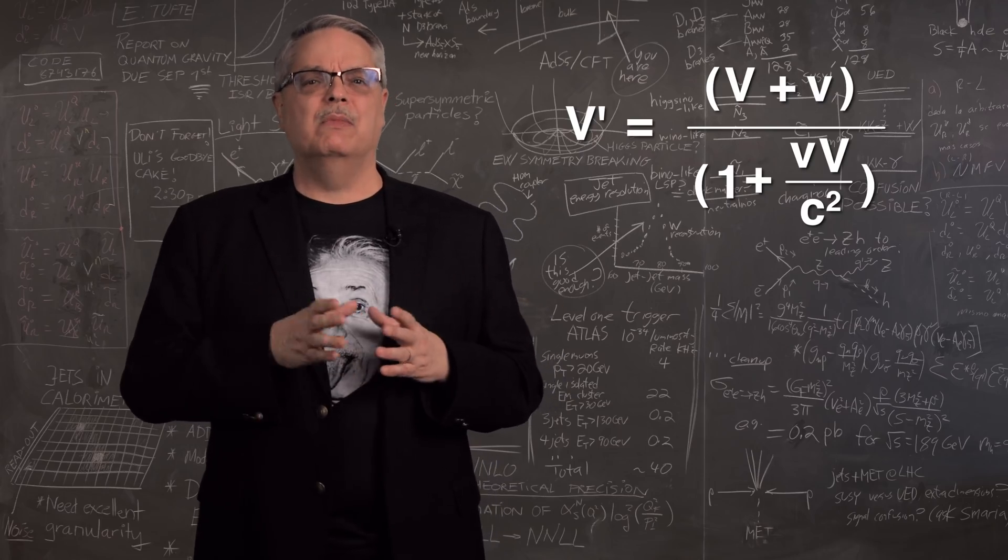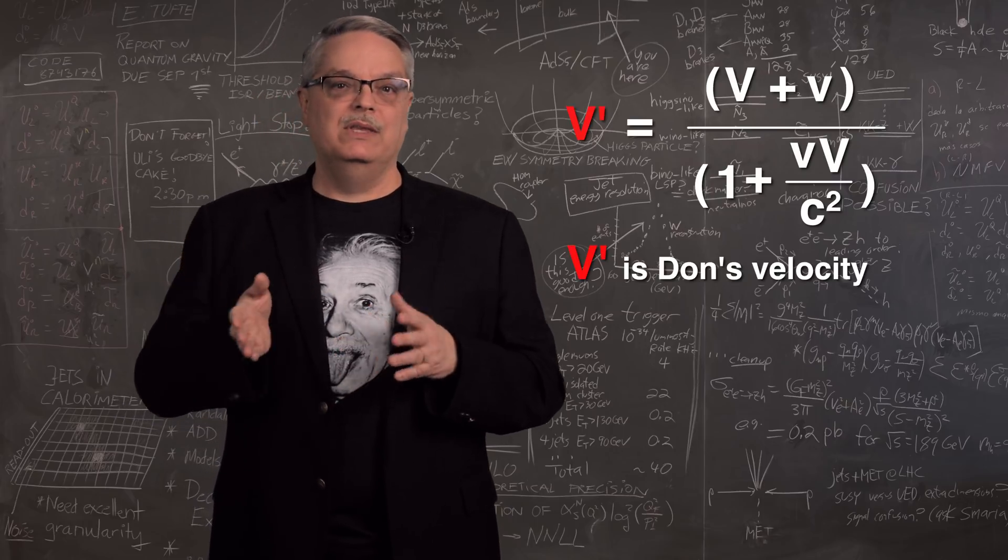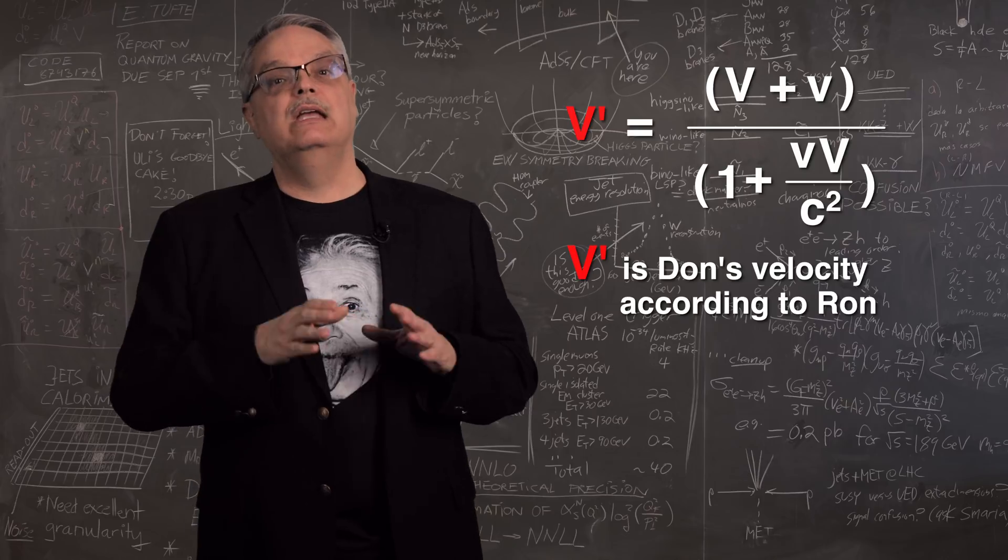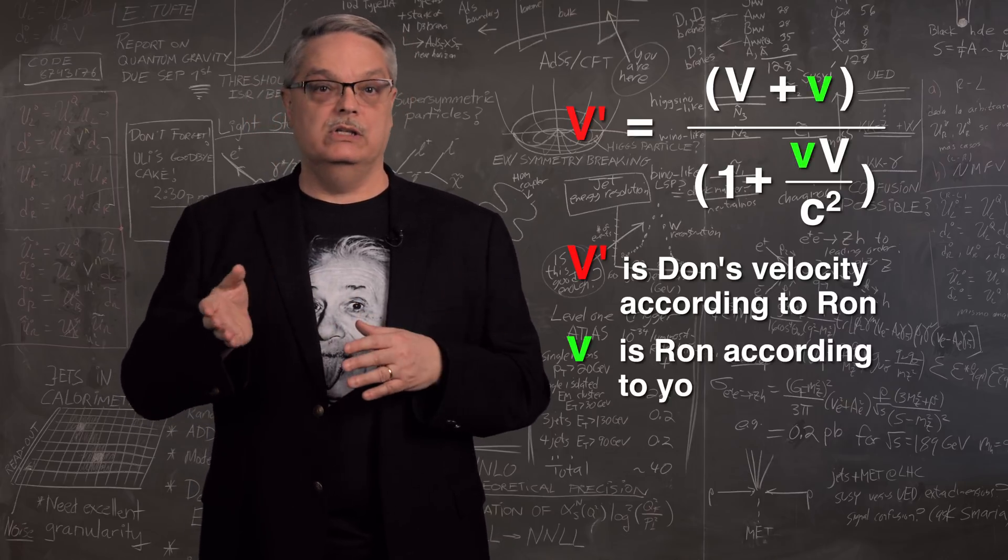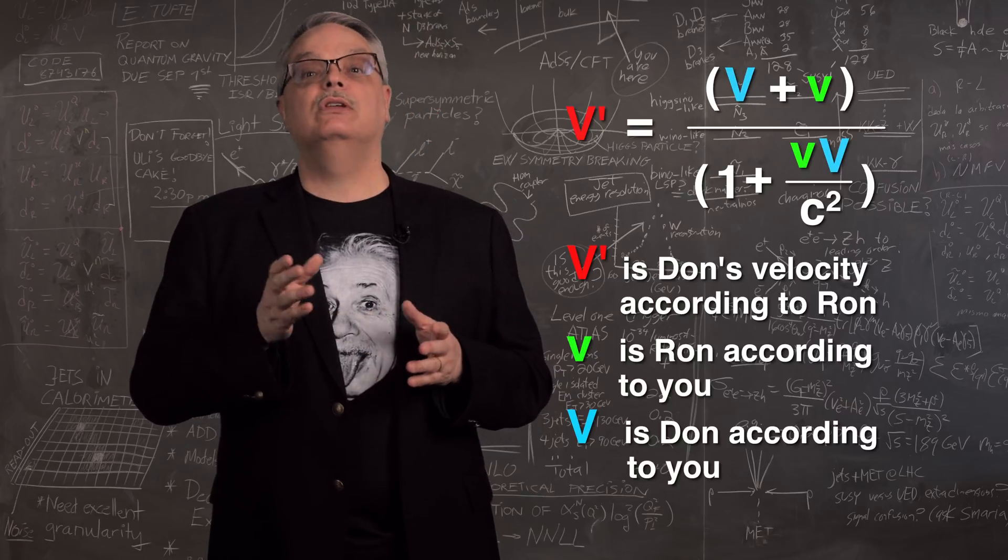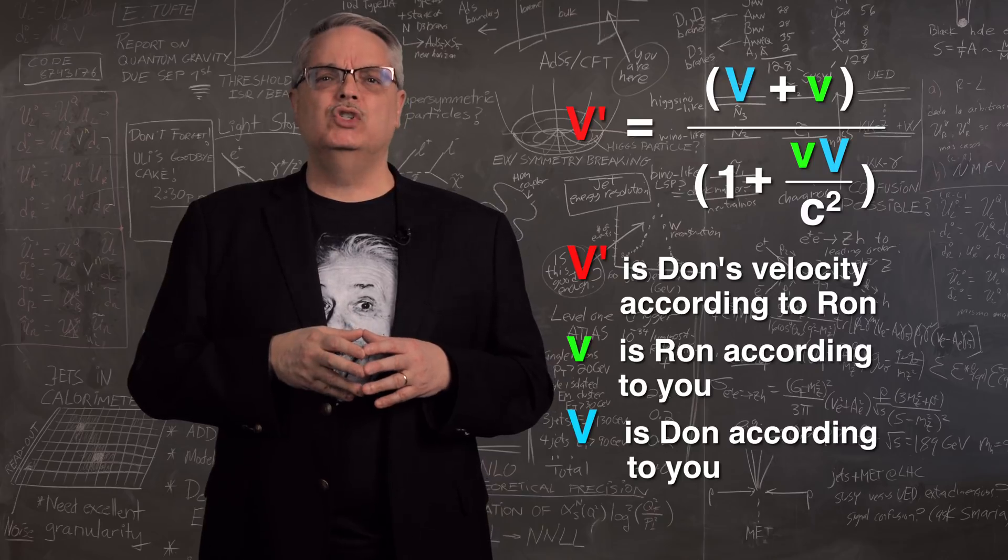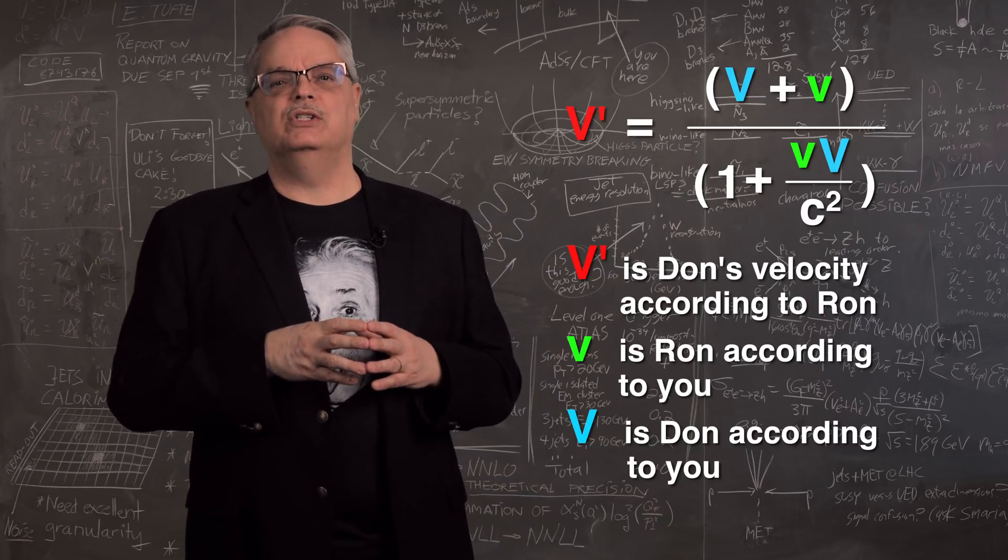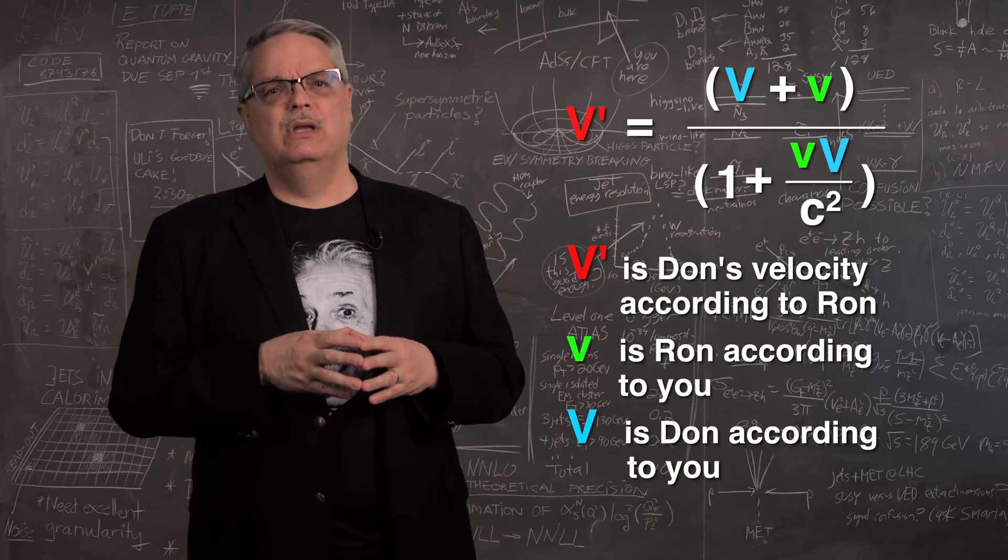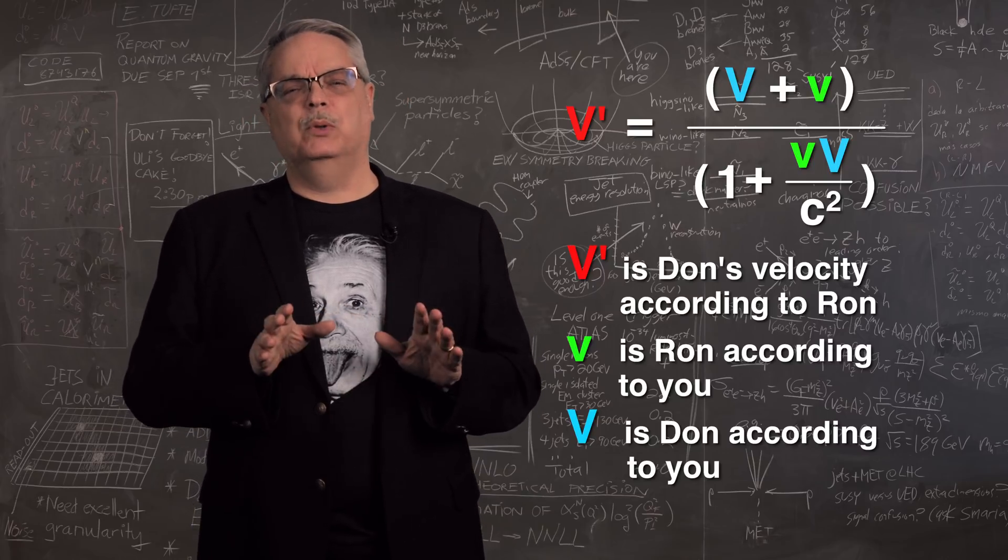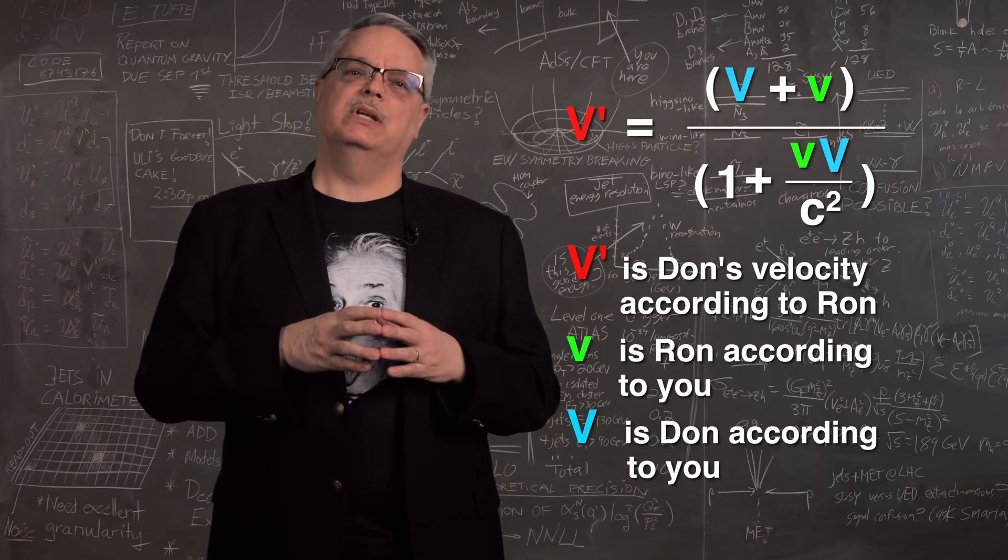All of those primes and unprimes might be confusing, so let me remind you that big V prime is Don's velocity according to Ron. The unprime velocities are little v, which is Ron according to you, and big V, which is Don according to you. I wrote it this way to avoid confusions with the ones and twos in the derivation, but you don't usually see it written in the textbooks with big V and little v. What you usually find is a simpler and cleaner notation. So let me tell you the cleaner notation and we'll work out the implications.